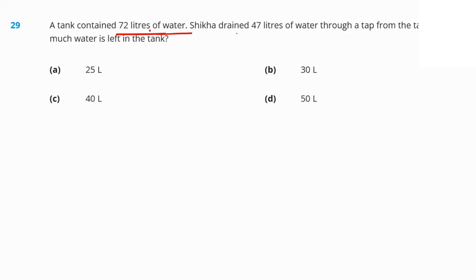Question number 29. A tank contained 72 liters of water. Shikha drained 47 liters of it through the tap. How much water left in the tank? 72 minus 47. If you subtract 47 from 72, that would give you 25 liters option B.